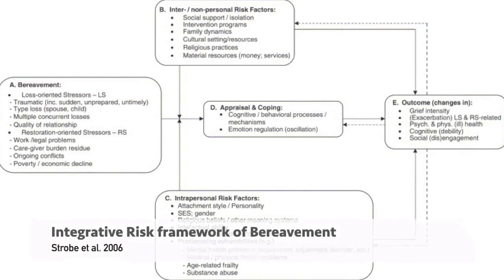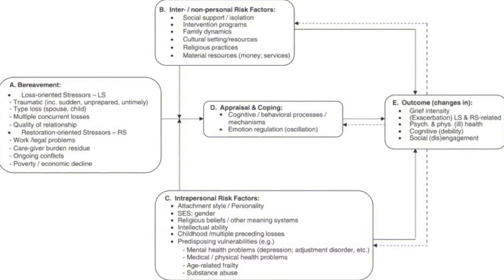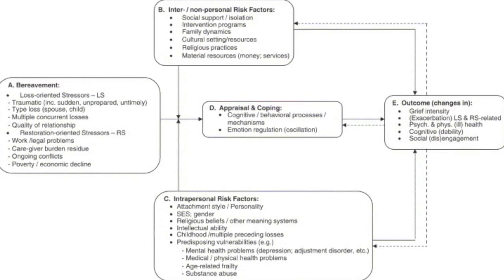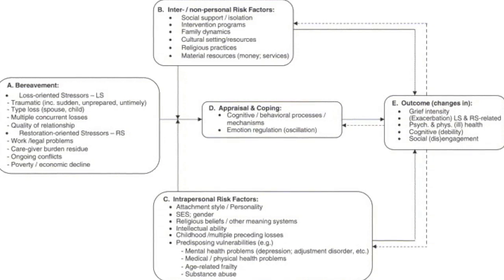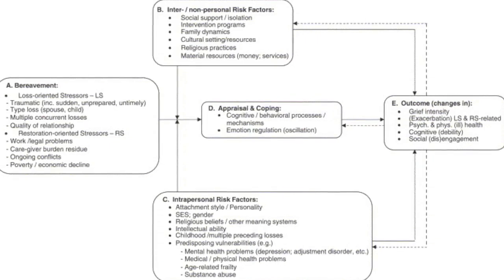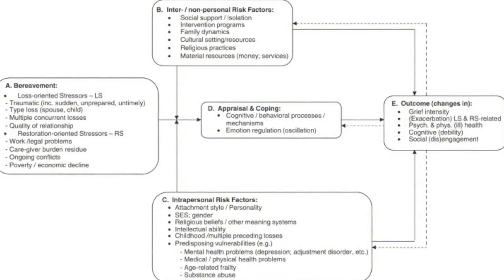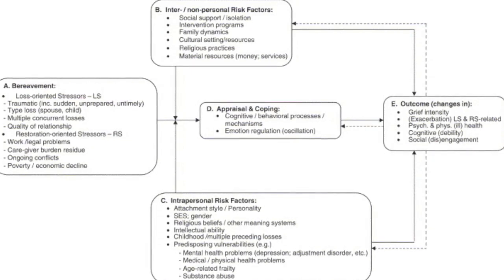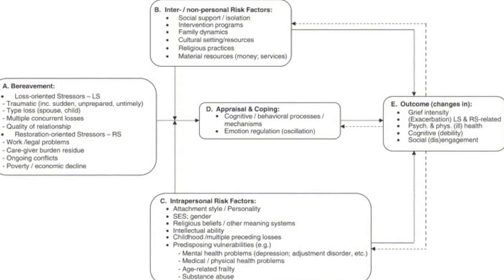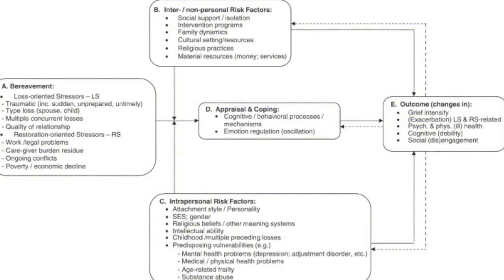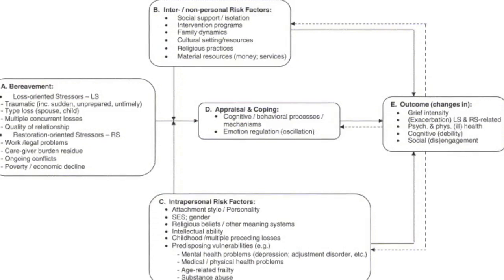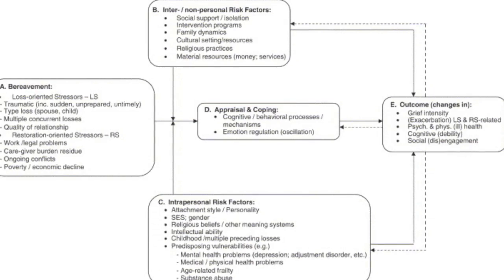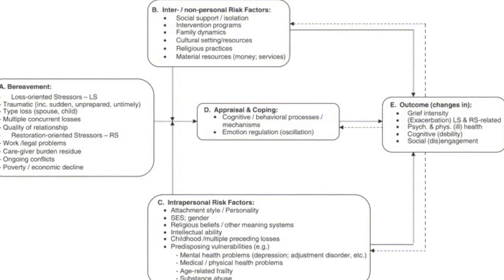Stroebe et al., 2006, proposed an integrative risk framework of bereavement, whereby a more complex pathway is detailed. Bereavement is affected by the stress of life and dying, as well as inter- and non-personal risk factors such as religious practices, cultural setting, family dynamics, and material resources. There are also intrapersonal risk factors such as the individual's religious belief, intellectual capacity, style of attachment, personality, socioeconomic status, gender, predispositions to vulnerabilities like mental health issues, cancer, medical disorders, substance abuse, and age. There is also appraisal and coping, involving cognitive-behavioural processes to help deal with the dying process, and finally the outcome — including whether the person will be socially disengaged, has come to grips with dying, and their grief.